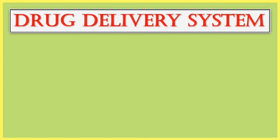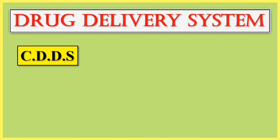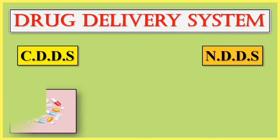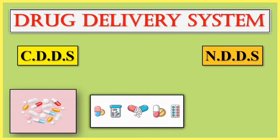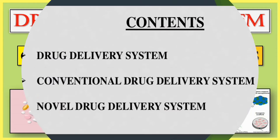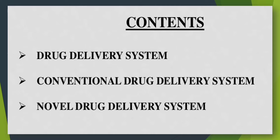In today's video we are going to talk about the drug delivery system. At the end of this video you will be able to understand how a therapeutic substance selectively reaches its site of action without reaching the non-target cells, organs, or tissues of your body. Our contents include the drug delivery system and its two types.